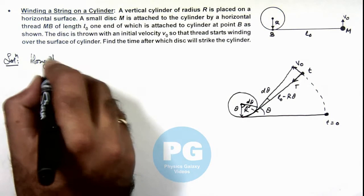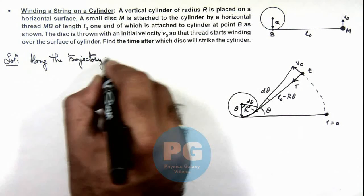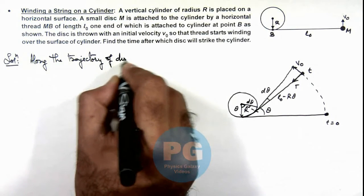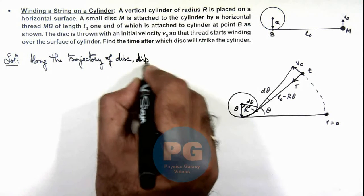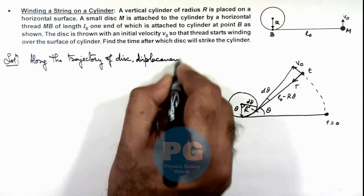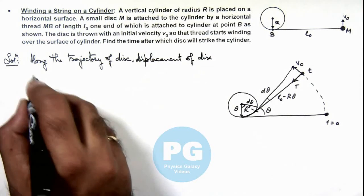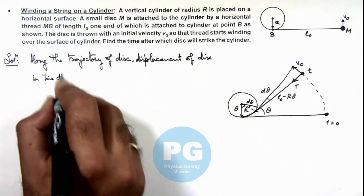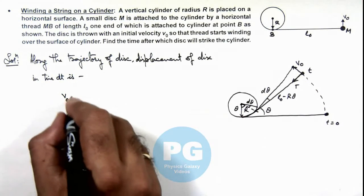Along the trajectory of the disc, displacement of disc in time dt is... this displacement we can simply write as v₀dt.